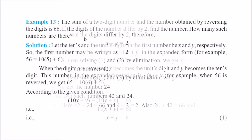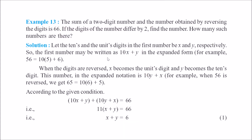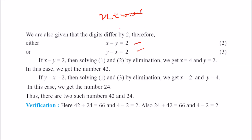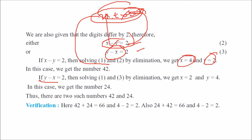The second condition is that the digits differ by 2, so we get either x minus y equals 2 or y minus x equals 2 — both possibilities. Using x plus y equals 6 and x minus y equals 2, we get 2x equals 8, so x equals 4 and y equals 2, giving the number 42. Using y minus x equals 2 instead, we get x equals 2 and y equals 4, giving the number 24. Both solutions satisfy that the digit difference is 2.